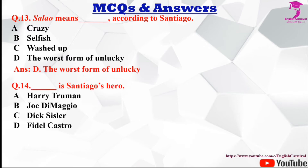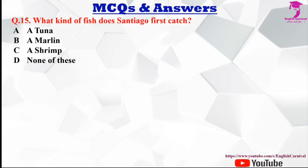Question number fourteen: Dash is Santiago's hero. Options are A Harry Truman, B Joe DiMaggio, C Dick Sisler, and D Fidel Castro. The correct answer is B, Joe DiMaggio.